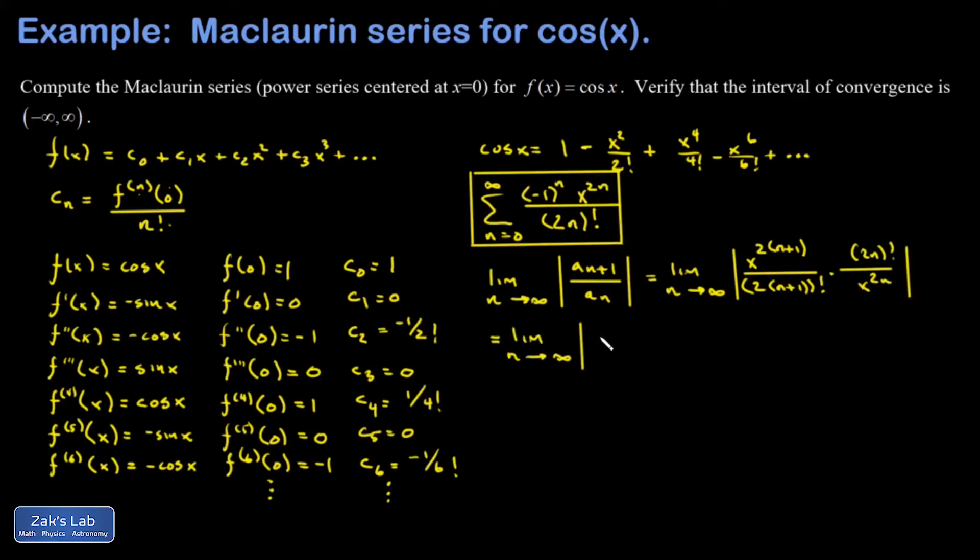So in my numerator, x to the 2 times quantity n plus 1 is x to the 2n plus 2, and then I have a 2n factorial stuck to that. Same thing with my factorial in the denominator: 2n plus 2, all factorial.